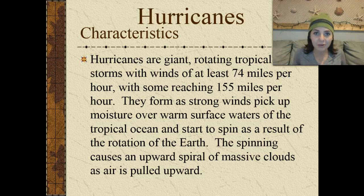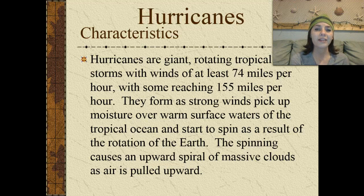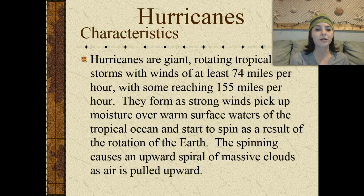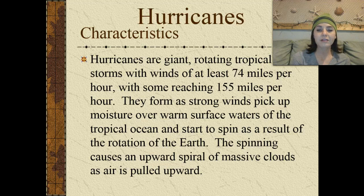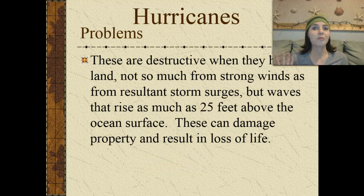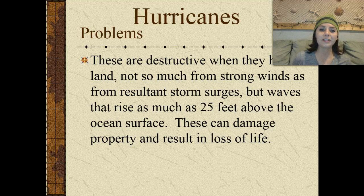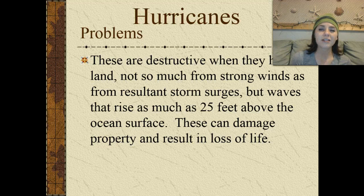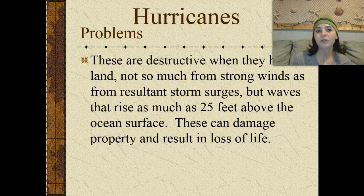Hurricanes are something that we have to deal with here in the Gulf Coast. They're giant rotating tropical storms with winds of at least 74 miles per hour, and they can reach up to 155 miles per hour. They form as strong winds pick up moisture over warm surface waters of the tropical ocean, and then they start to spin as a result of the rotation of Earth. The spinning causes an upward spiral of massive clouds as the air is pulled upwards. They're very destructive when they hit land, not so much because of the wind, but because of all the flooding that occurs. They can flood buildings, cause tons of property and water damage, lots of debris can get scattered everywhere, we can lose power, and of course we also can lose human life.